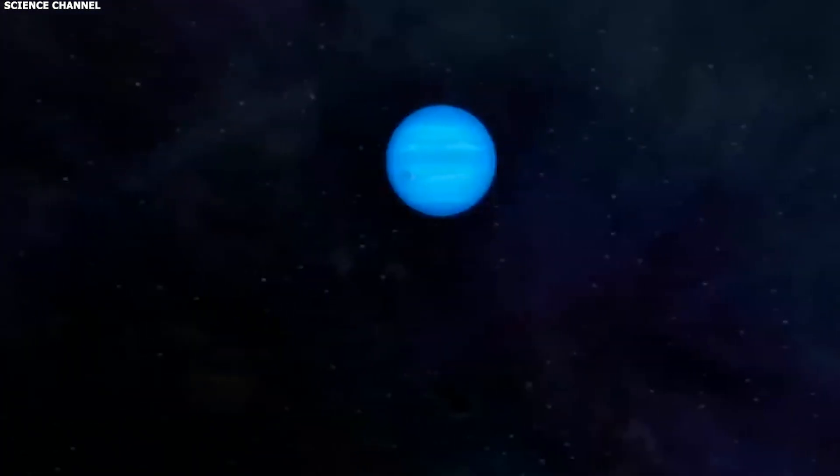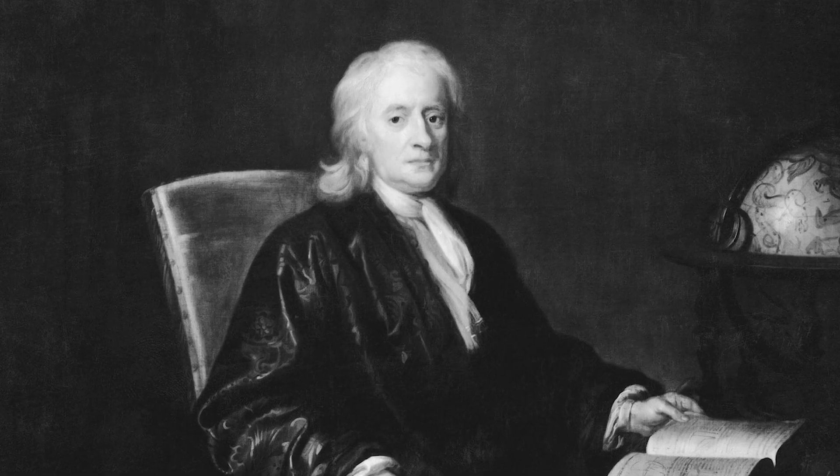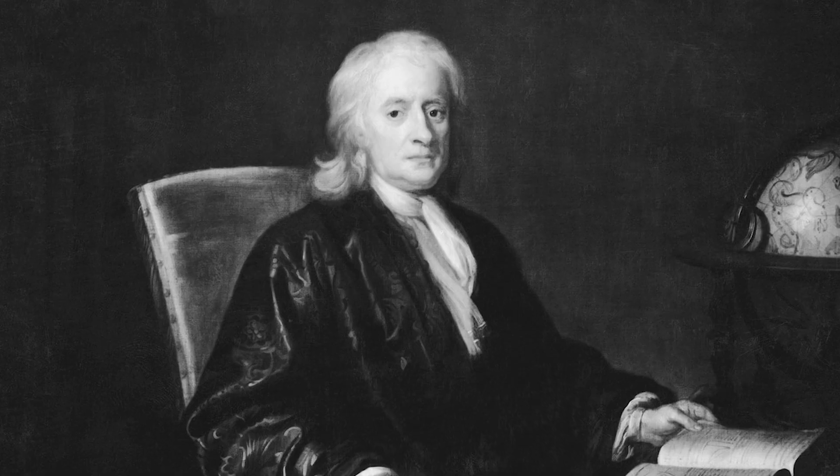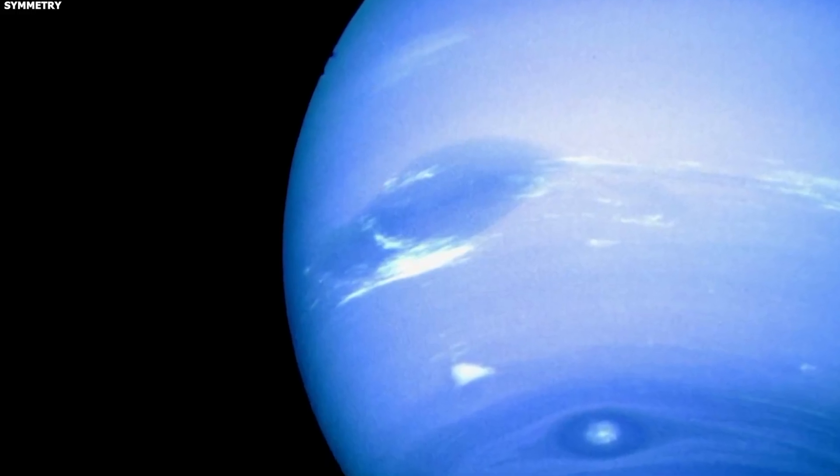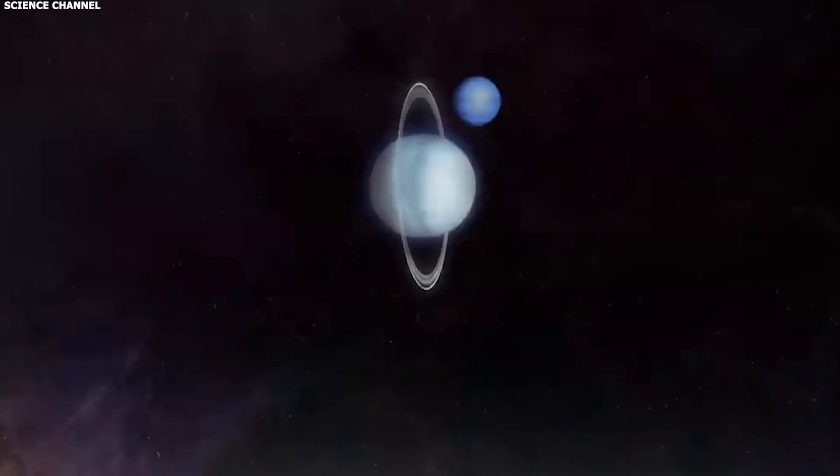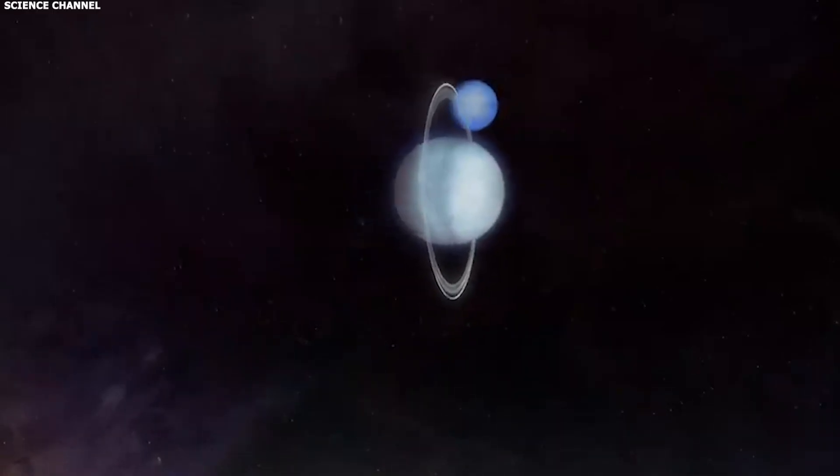The problem wasn't a missing planet. The problem was that Newton's laws of gravity, as brilliant as they were, weren't the complete picture. Gravity needed to be reimagined, and in 1915, Albert Einstein did exactly that with general relativity.